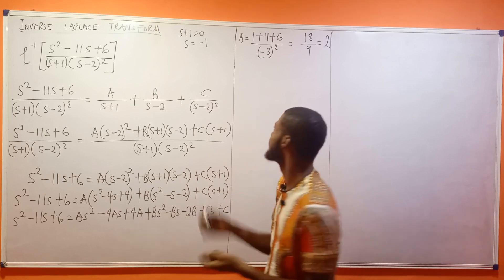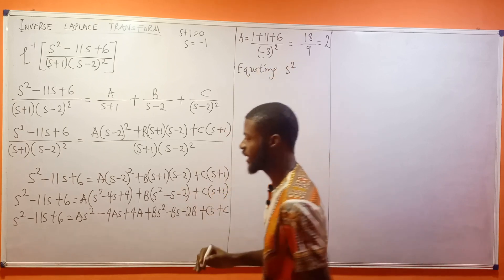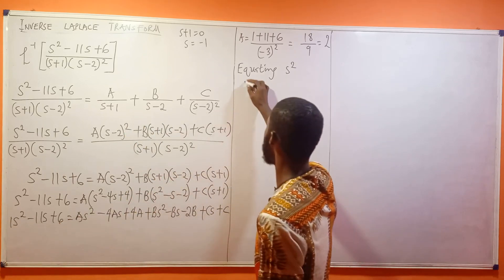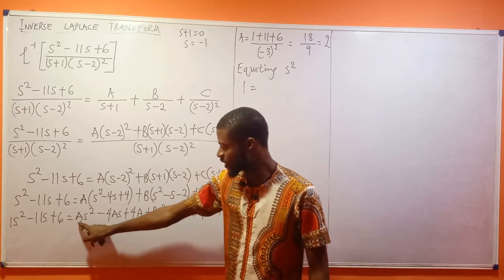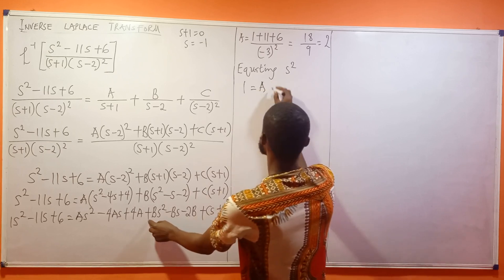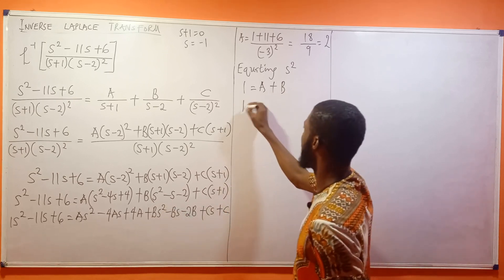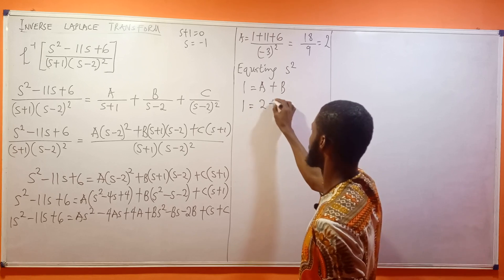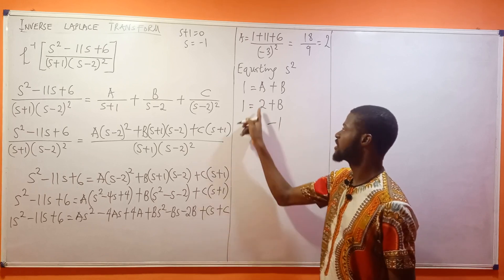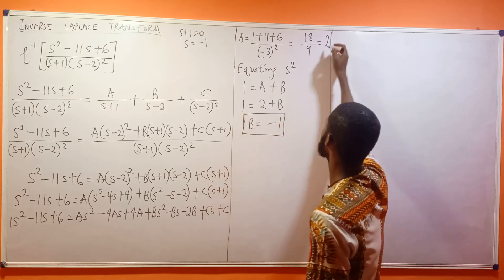Now let me get B by equating the s² coefficients. The coefficient of s² on the left is 1. On the right we have A and B as the s² coefficients, so 1 = A + B = 2 + B. Therefore B = 1 − 2 = −1.